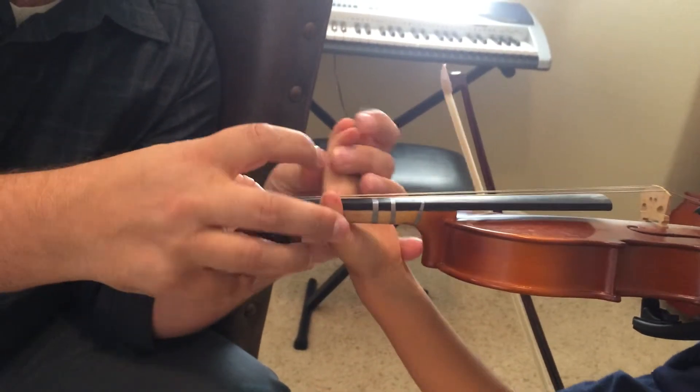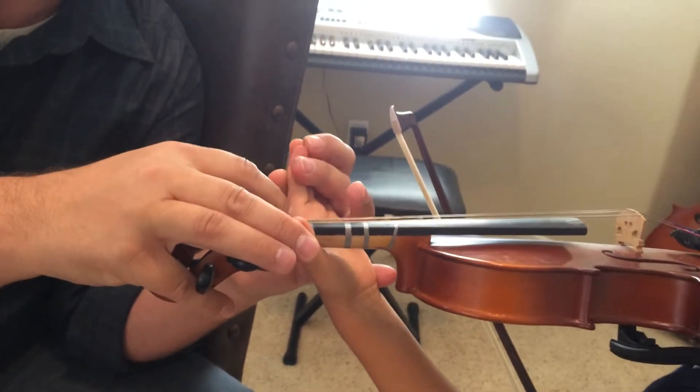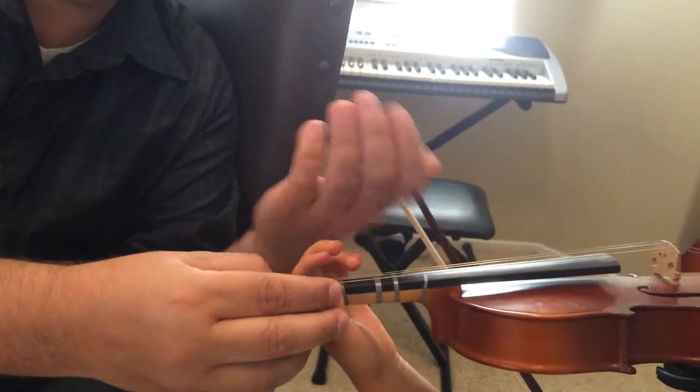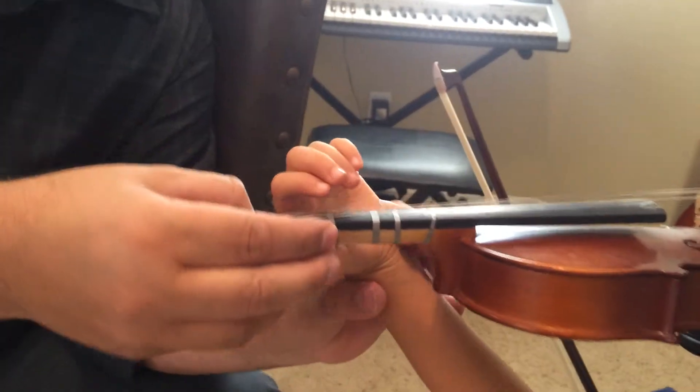What you're going to do is take your hand and make sure that this part of your hand does not touch the fingerboard. Your thumb on this side usually stays bent, it always seems to stay in this place.